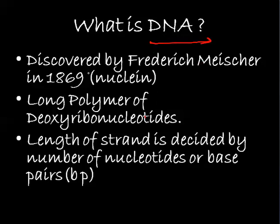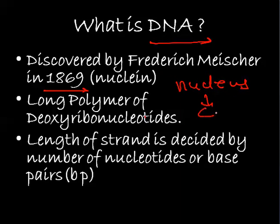DNA was discovered in 1869. While investigating the nucleus of the cell, Frederick Miescher came across an acidic substance called nuclein. He called it nuclein because it was acidic in nature. It was a long polymer consisting of a lot of sugar and phosphate molecules.